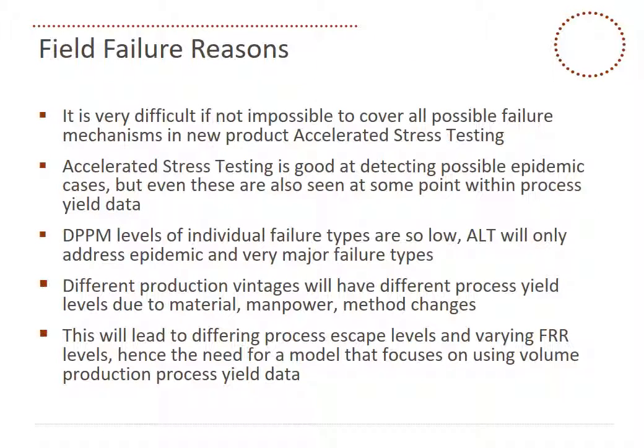With the field failure reasons, it's difficult if not impossible to cover all possible failure mechanisms in new product accelerated stress testing. Nowadays we use small volumes and do testing as quickly as possible. You've seen in earlier webinars how we set up the ALT and use test strength modelling for early life testing, but we're still not going to find everything. Accelerated stress testing is very good to detect possible epidemic cases, but even these are also seen at some point within process yield data, if you look closely enough.